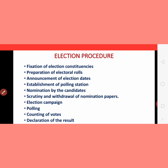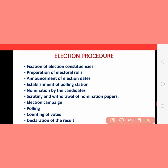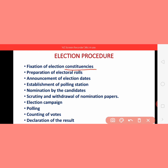Next is establishment of polling stations. After this, different polling stations are set up for the convenience of people — so that they know where to go and cast their vote. Many polling stations are created in different parts of the constituency for the convenience of the people.